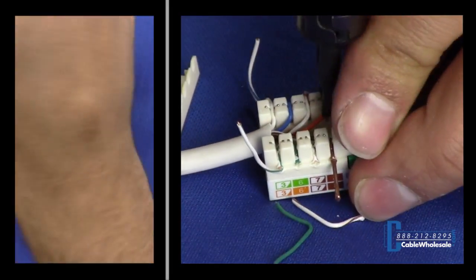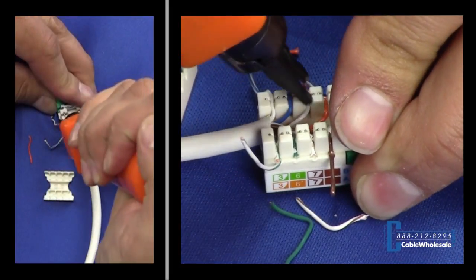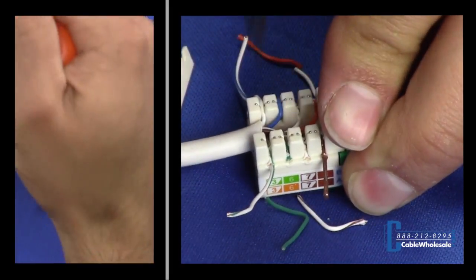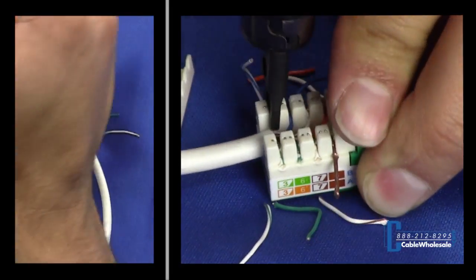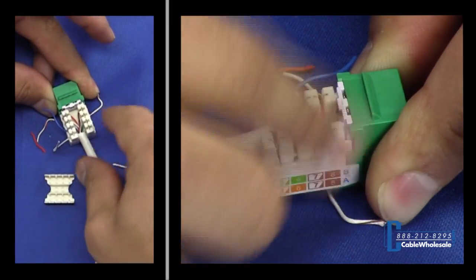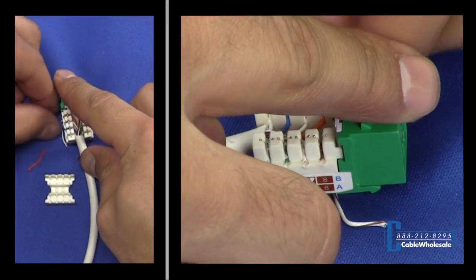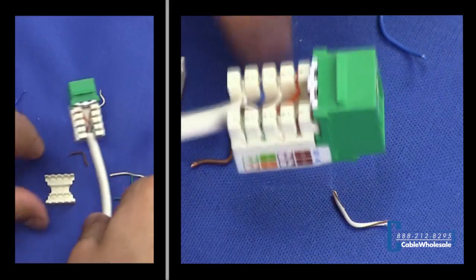Now for the other side, switch the blade over and crimp each of these down. All right, one more. Okay, I'll crimp down and these should fall off nicely. Yeah. Okay, done.